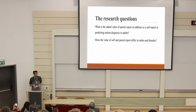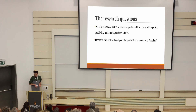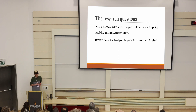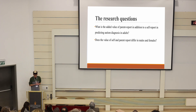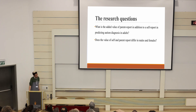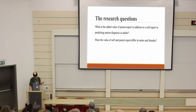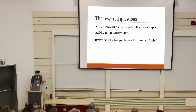So, in this study, we're asking these following questions: What is the added value of parent report in addition to self-report in predicting autism diagnosis in adults? We hypothesize that using self and parent report screeners will improve correct classification of individuals as autistic or typically developing. And does the value of self and parent report differ in males and females? We hypothesize that parent report will contribute more to correct classification of males than that of females.